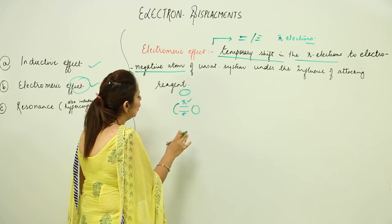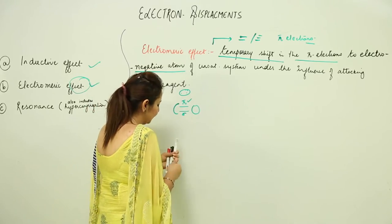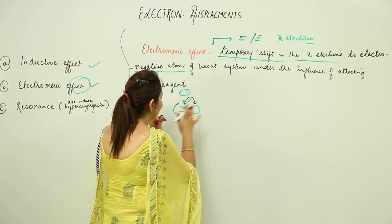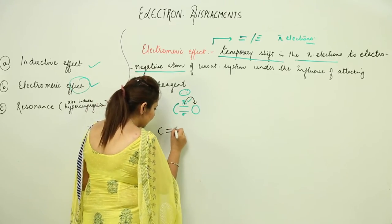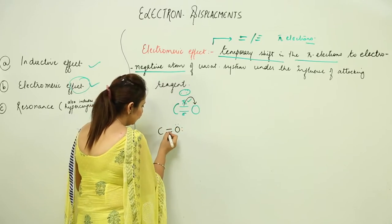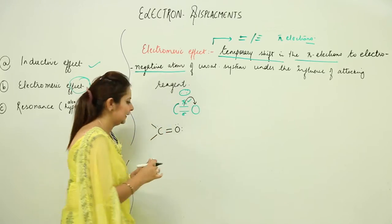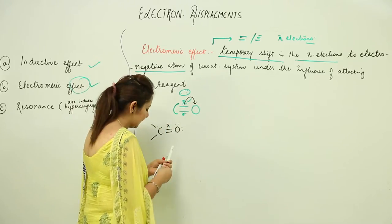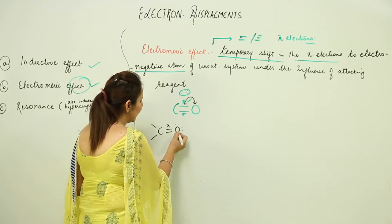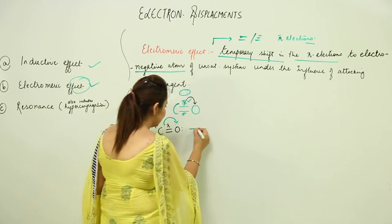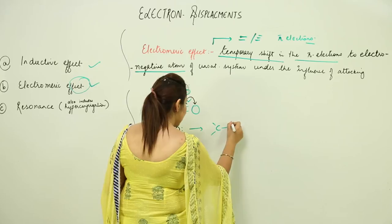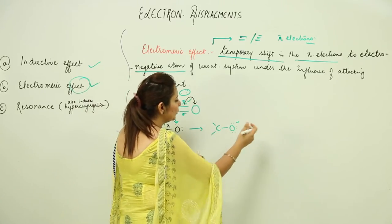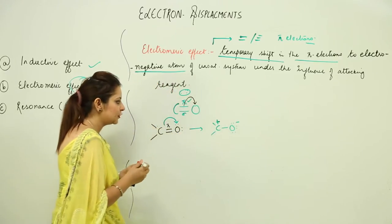For example, in a C=O bond, out of C and O, the electronegative atom is obviously oxygen. So there is a complete transfer of pi electrons to the oxygen atom. What happens is that the double bond becomes a single bond, and the pi electrons move to the electronegative atom. As a result, oxygen acquires a negative charge, and since the electrons have moved away from carbon, the carbon acquires a positive charge.